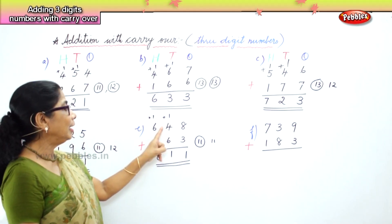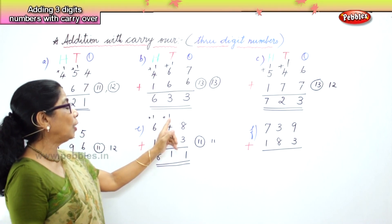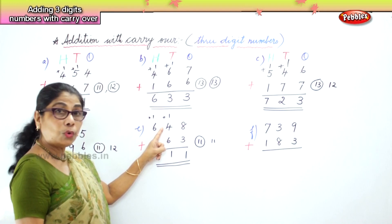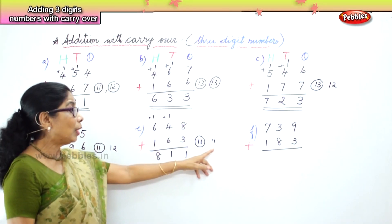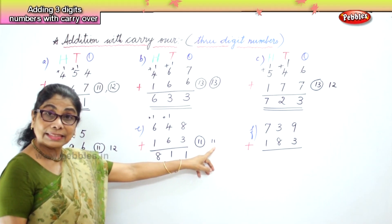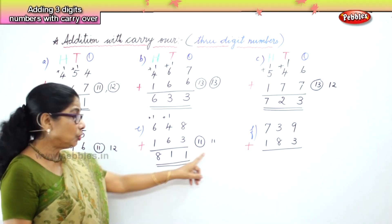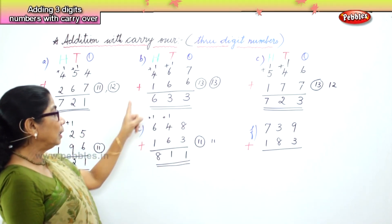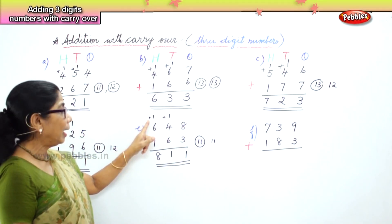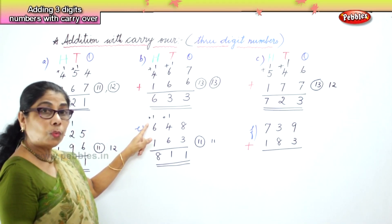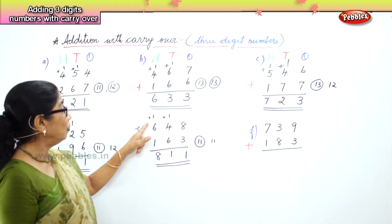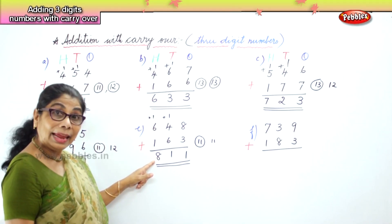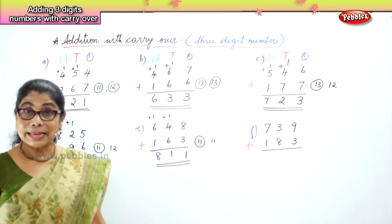In the hundreds place: you have 100 carried, 600, and 1 more. 6 plus 1 is 7, plus 1 more is 8. So you have 8 hundreds. The answer is 811.